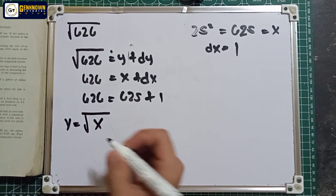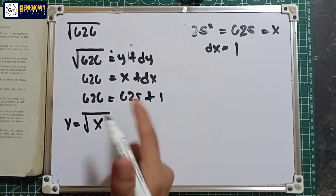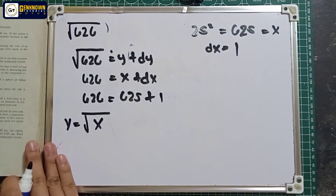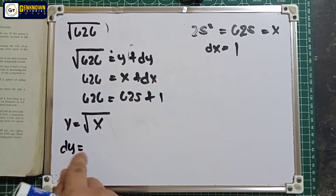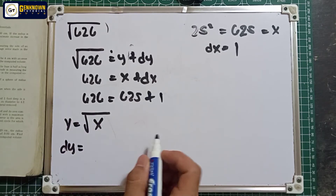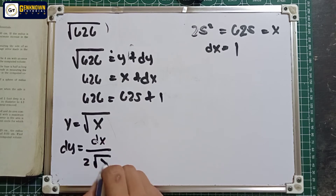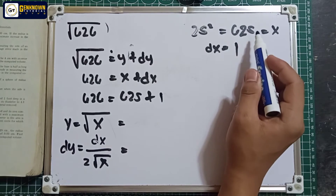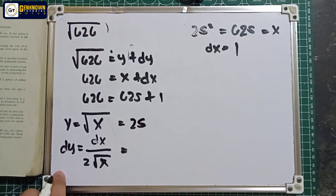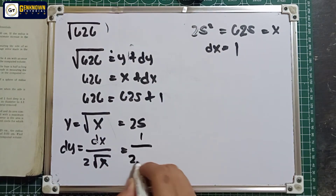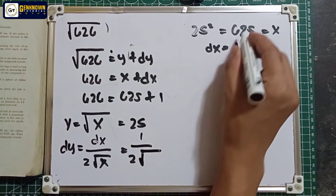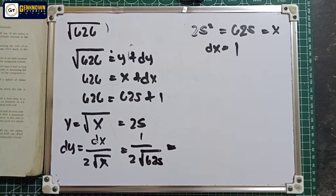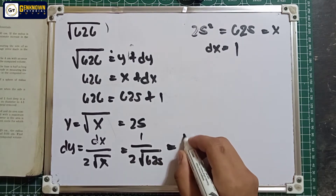Let y equal square root of x. We derive it through differentials: dy equals dx over 2 times square root of x. Substituting: y equals square root of 625 equals 25, and dy equals 1 over (2 times 25) equals 1 over 50.